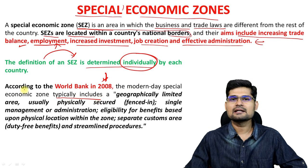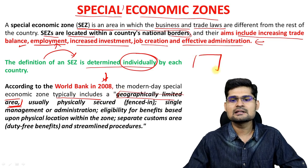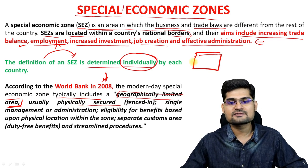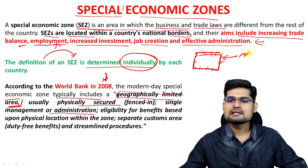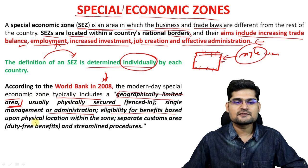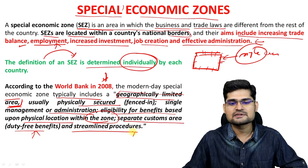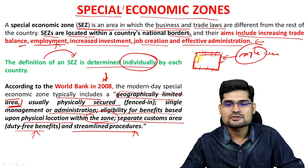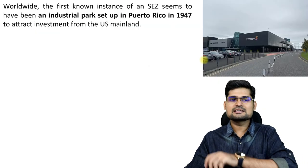The modern day special economic zone typically includes a geographically limited area — it's a given piece of land which is clearly determined and physically secured, fenced from outside. There should be single management or administration. Eligibility for benefits is based upon physical location within the zone, and there is a separate customs area with duty-free benefits and streamlined procedures. The specific physical location and resources within this boundary are restricted to this particular zone.